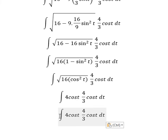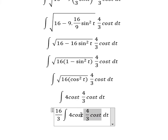Number 4 and 4 over 3 we put outside, so we have 16 over 3 cosine t cosine t. We have cosine t square.